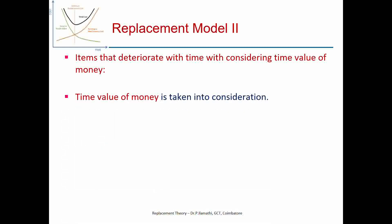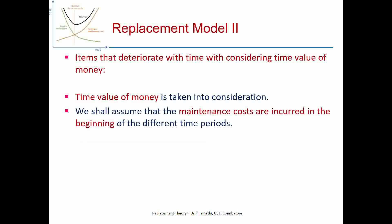Here the time value of money is taken into consideration, and there is an assumption that the maintenance cost, or the running cost, or the summation of maintenance and operating cost, will occur at the beginning of different time periods — that is, at the beginning of every year. We have to calculate the present worth factor to determine the time value of money, also known as the discount factor or discount rate.